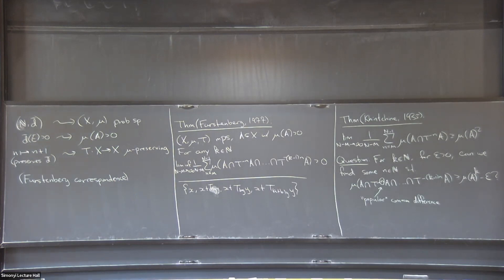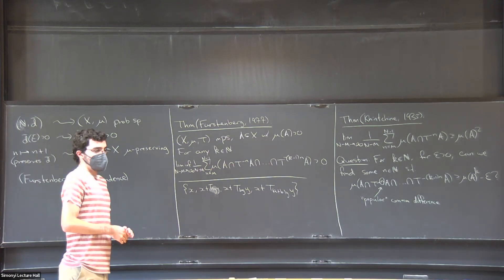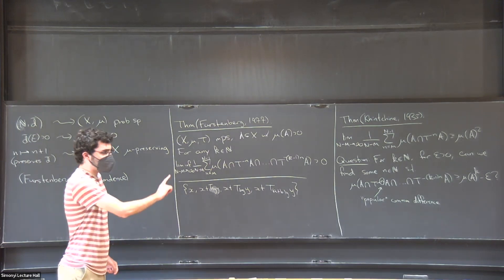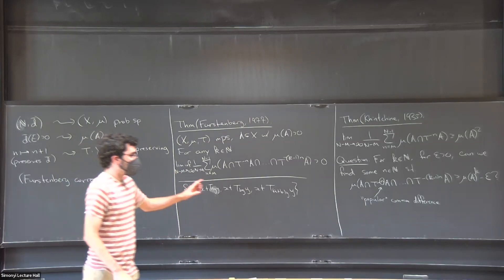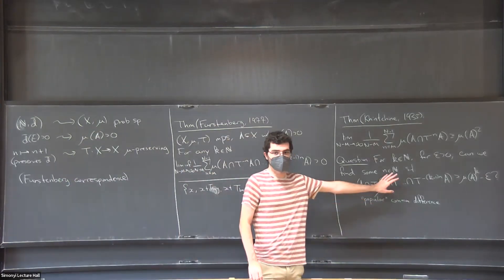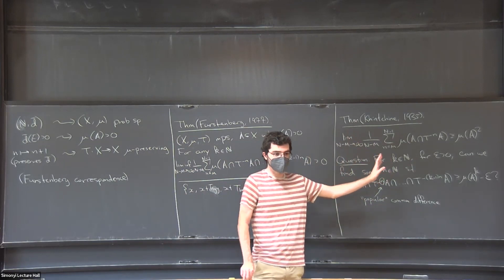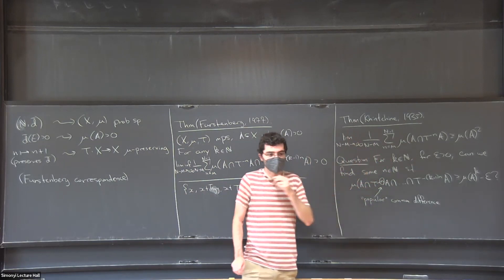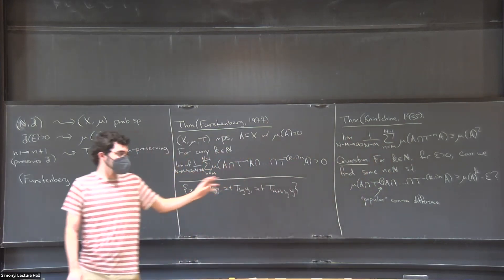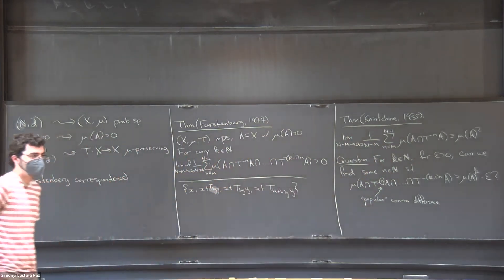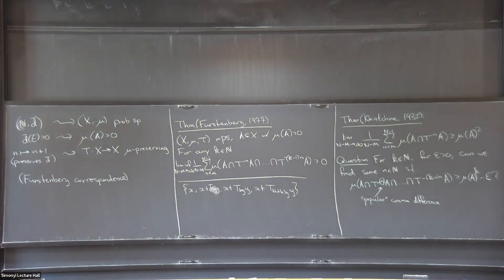So these results you mentioned, they're all true for arbitrary probability space with a measure preserving transformation? Yeah, there is a small technical assumption I swept under the rug. For this version, I need to assume that the system is ergodic, if you know what I mean. I swept that under the rug because for the combinatorics, that's not really an assumption. It doesn't really matter. But if you don't assume ergodic, some things fail. But beyond that, no other assumptions. All right. Great.